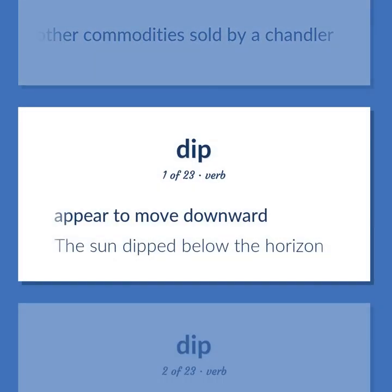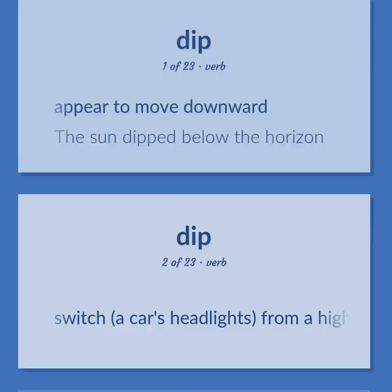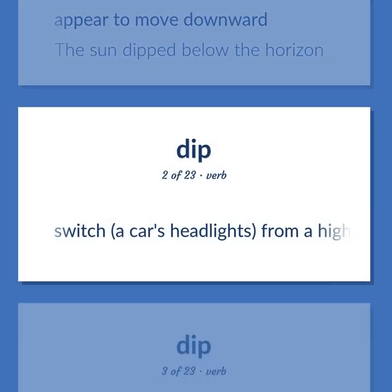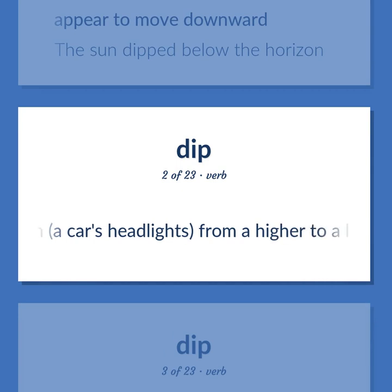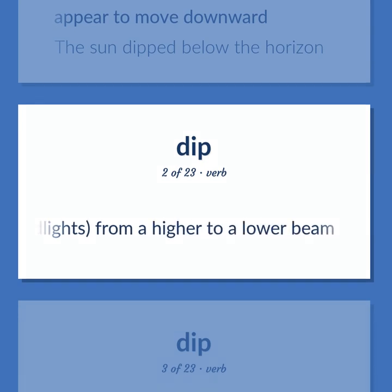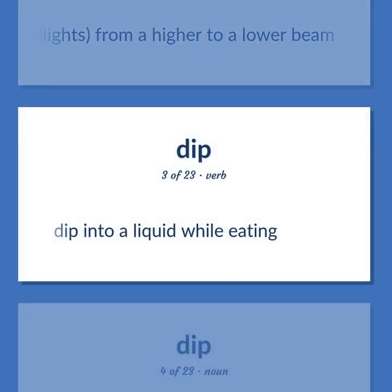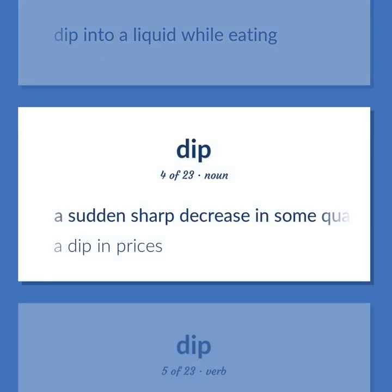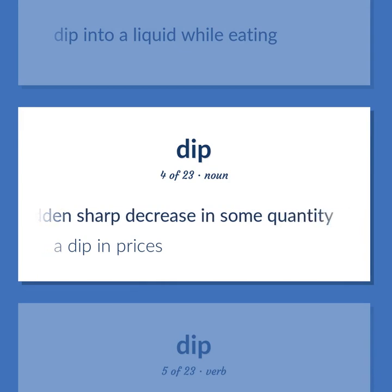Appear to move downward. The sun dipped below the horizon. Switch a car's headlights from a higher to a lower beam. Dip into a liquid while eating. A sudden sharp decrease in some quantity. A dip in prices.